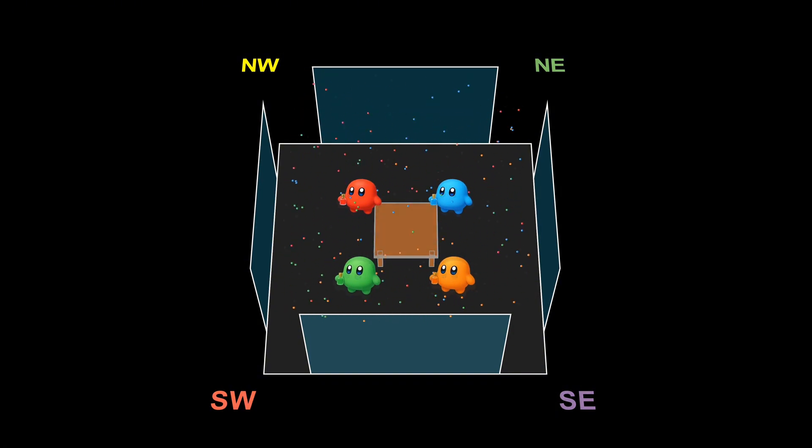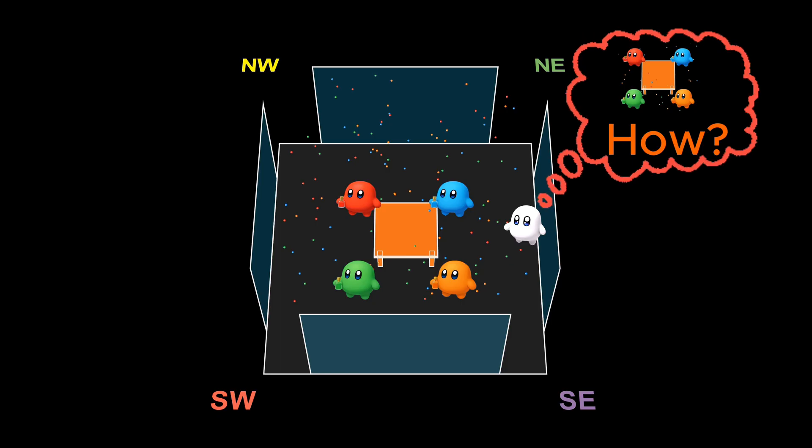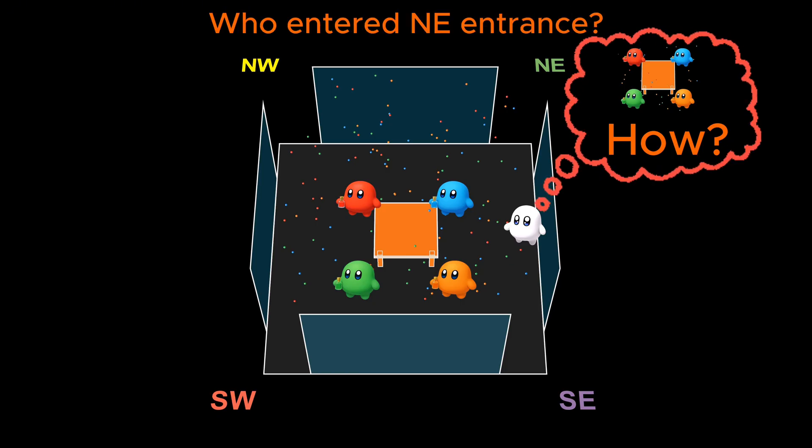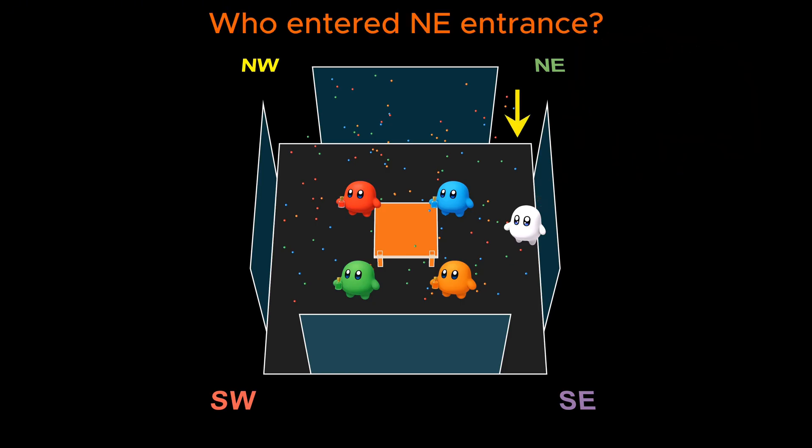Now here's the complicated part. You yourself enter the room long after all four guests have already taken their seats. You never got to see who entered through which door. Your goal is to figure out which guest entered through the northeastern entrance. But you face two constraints. First, you arrived too late to witness anything. And second, you're not allowed to check any security cameras.